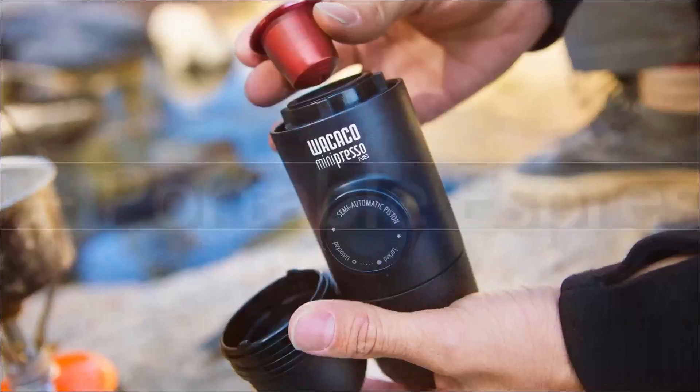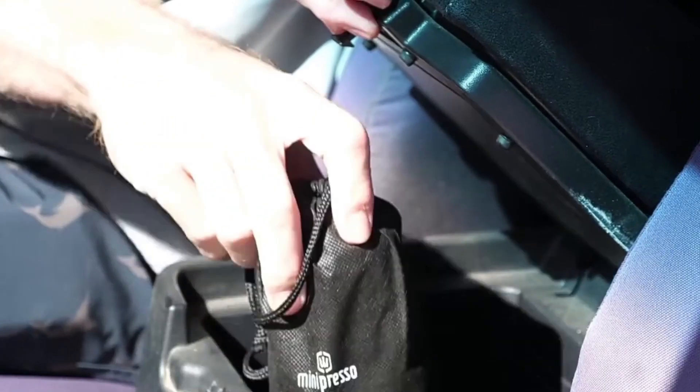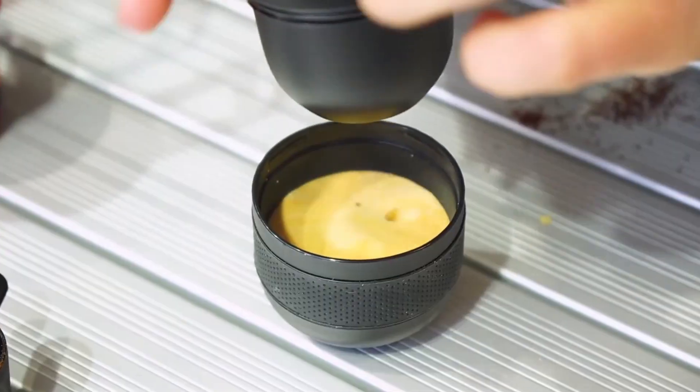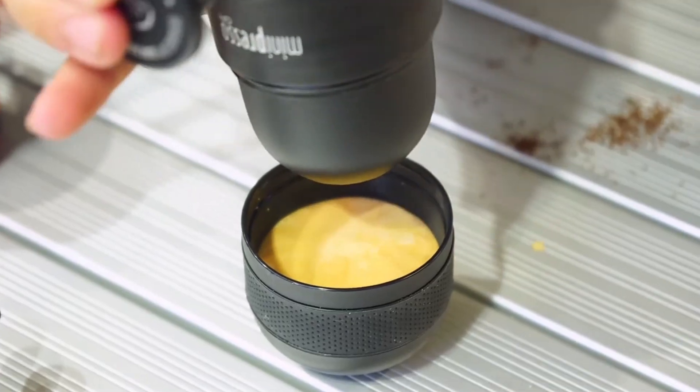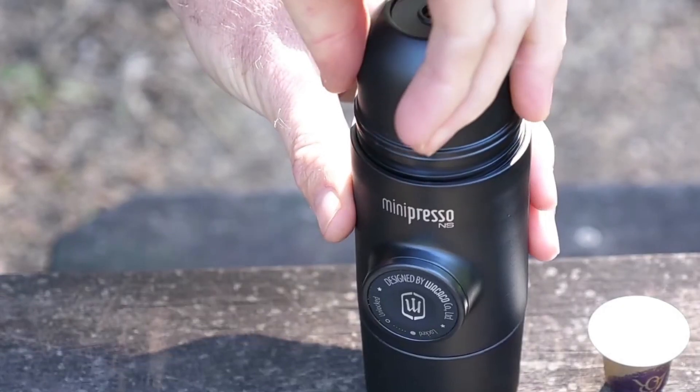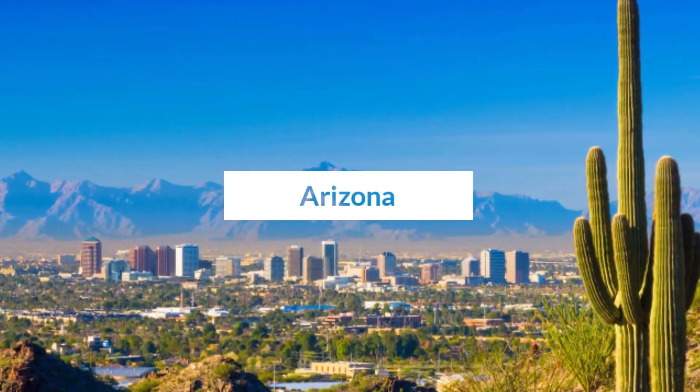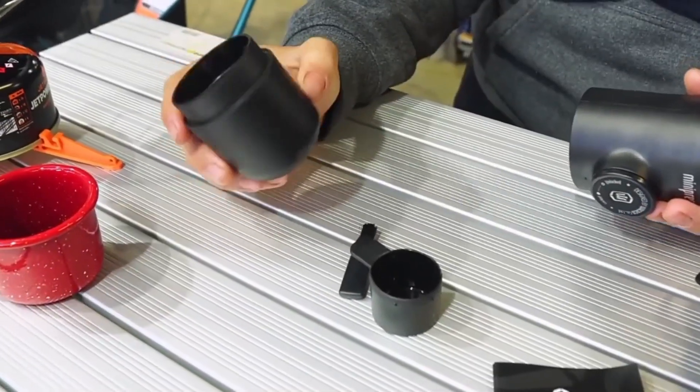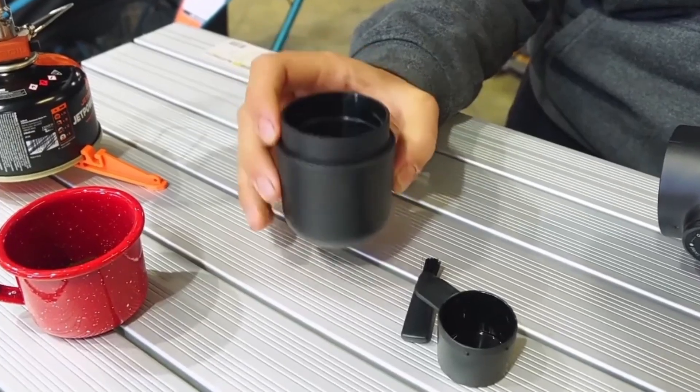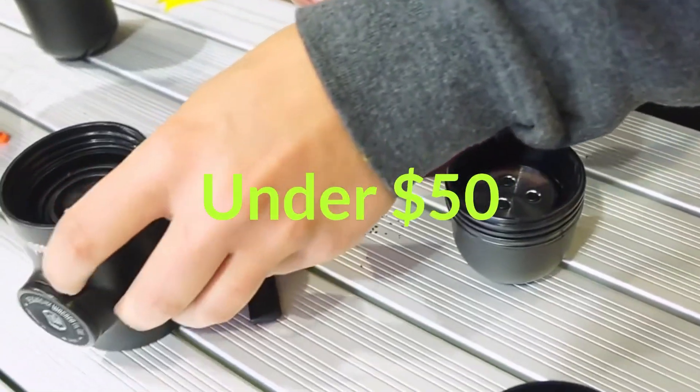Number 4: MiniPresso portable espresso machine. Wacaco's MiniPresso GR espresso maker is a brilliant design and lightweight device that you can use to grind your own coffee beans wherever you go. From its ergonomic design to features like portability, this must-have travel accessory will make all the difference, regardless of whether you are visiting New York in winter or Arizona in summer. Plus, it comes with an integrated cup so that there's no need for extra pieces necessary, all for under 50 dollars.